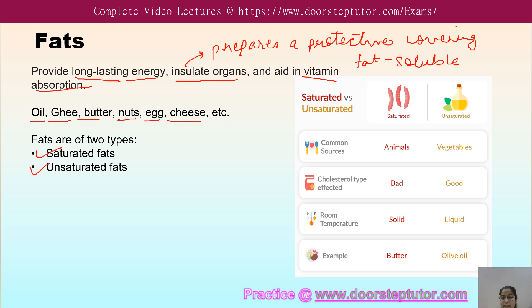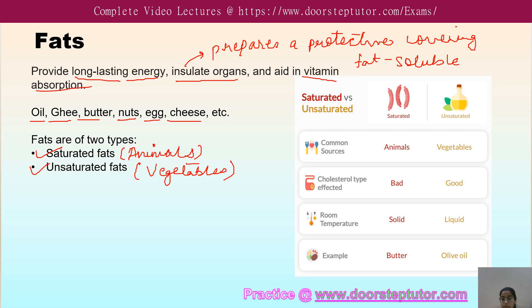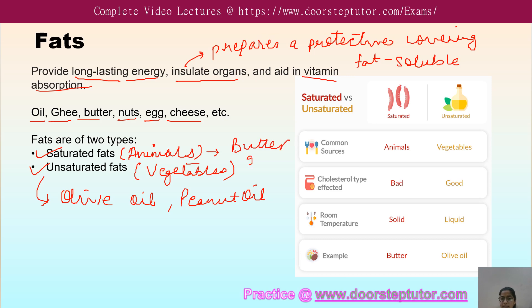There are two types of fats: saturated fats and unsaturated fats. Saturated fats are obtained from animals and animal products — for example, butter and ghee. Unsaturated fats are mostly obtained from vegetables and certain fruits — for example, olive oil and peanut oil. As shown in the table, common sources of saturated fats are animal-based, while unsaturated fats come from vegetables.